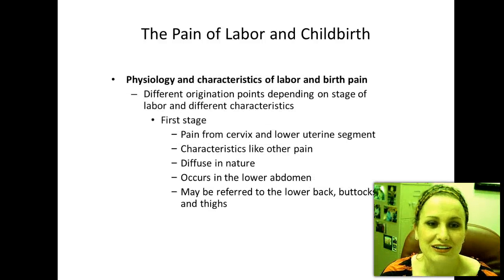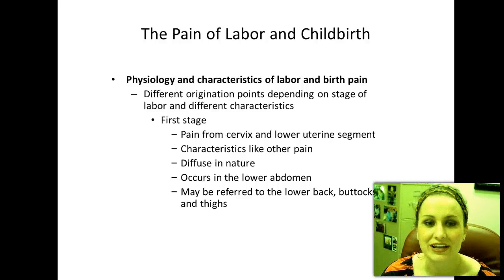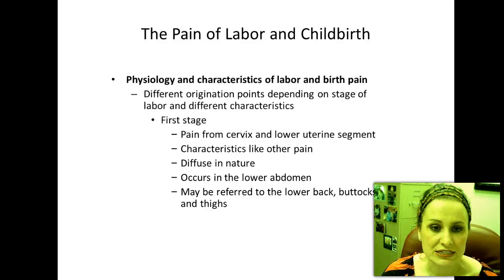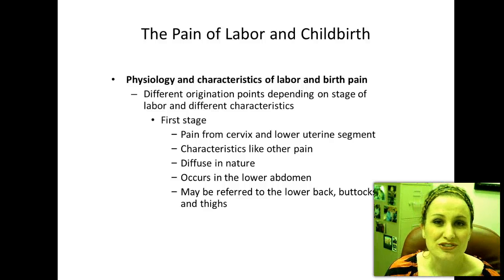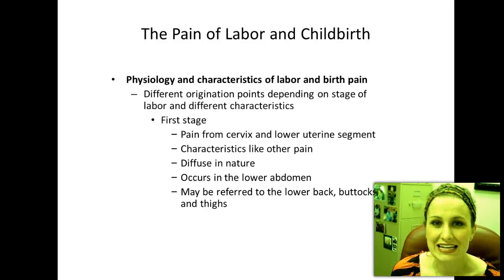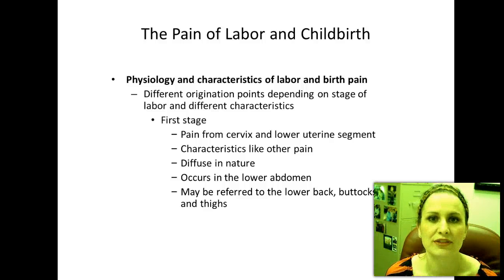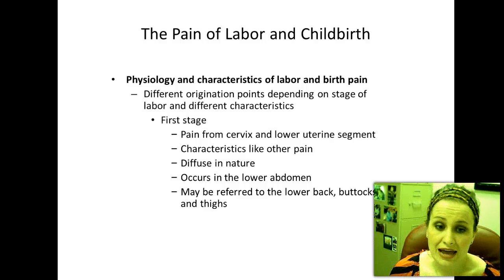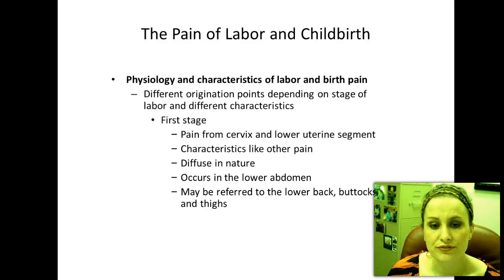The physiology and characteristics of labor and birth pain differ depending on the stage of labor. Initially in the first stage, pain comes from the cervix and the lower uterine segments. It's diffuse in nature and occurs in the lower abdomen.